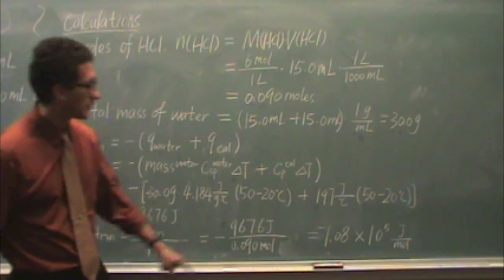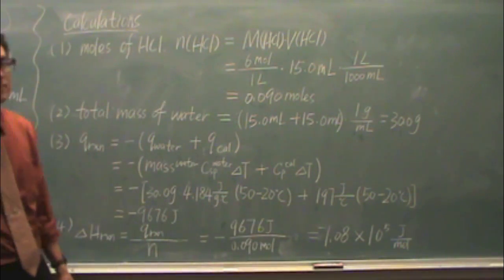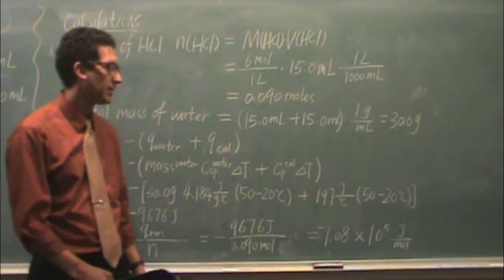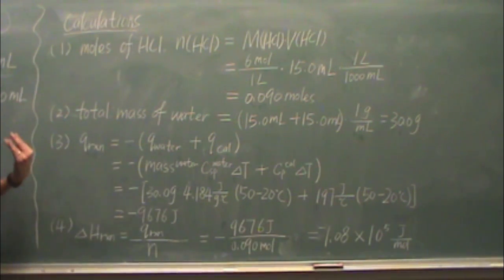Because it's exothermic, you expect a negative answer. It's 1.08 times 10 to the 5 joules per mole. And there's your enthalpy of reaction for part four.